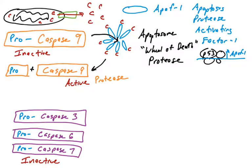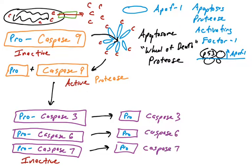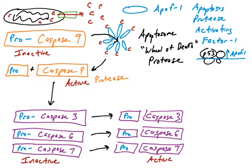Once a signal to undergo apoptosis is received, the apoptosome forms, cleaves pro-caspase-9, and activates it. Active caspase-9 then acts on pro-caspases-3, -6, and -7, cleaving off their inhibitory domains to produce active caspase-3, -6, and -7 — also proteases. This is the protease cascade: apoptosome cleaves and activates caspase-9, which cleaves and activates caspases-3, -6, and -7, amplifying the apoptotic signal.